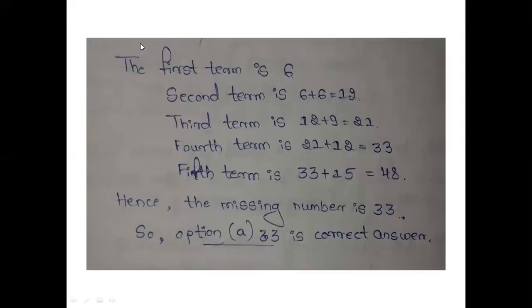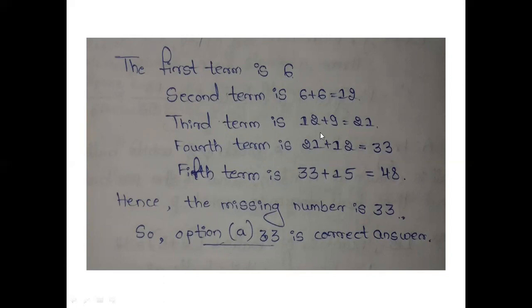The first term is 6. Second term is 6 plus 6 equals 12. 12 plus 9 equals 21. 21 minus 12 equals 9, that's the difference. 21 plus 12 equals to 33, 33 plus 15 equals to 48. Hence the missing number is 33.